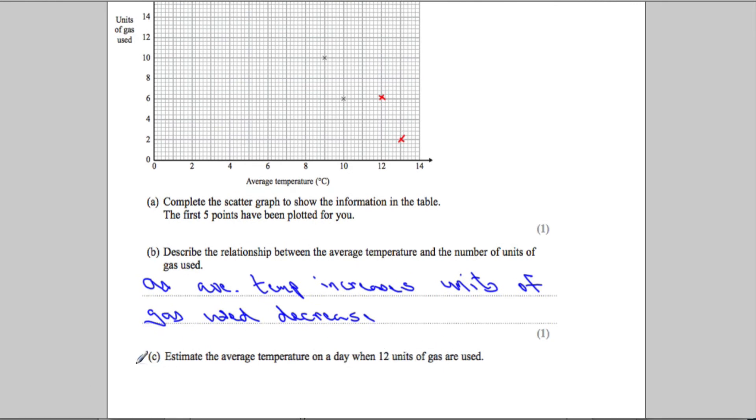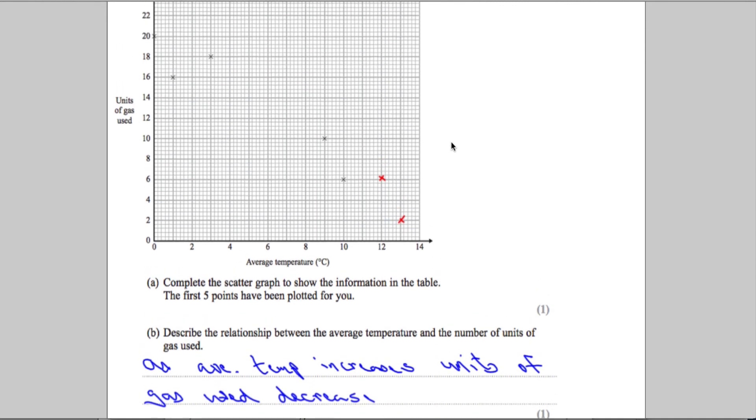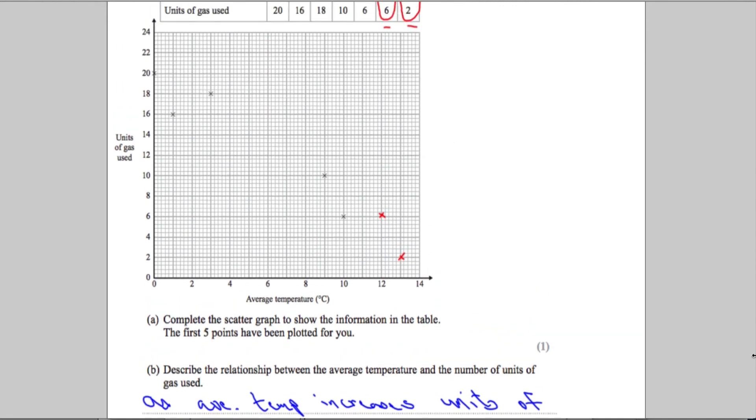In Part C, estimate the average temperature on a day when 12 units of gas are used. A very common question on scatter diagrams - the word estimate is basically telling me draw a line of best fit, so that's exactly what I'm going to do.